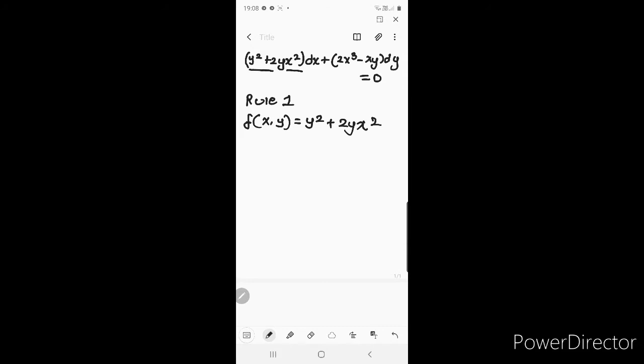And to satisfy a rule for a homogeneous equation, f should give me t raised to n times f. This is the basic requirement for a homogeneous equation where n is a natural number.